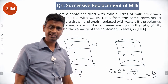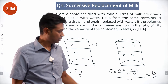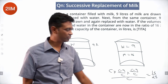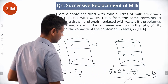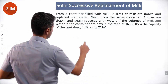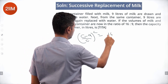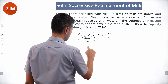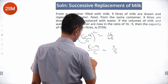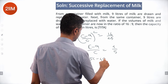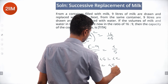The fraction of milk remaining — milk by overall — should be 16 by 25, which is 16 by (16 plus 9). So C minus 9 by C whole squared equals 16 by 25. Therefore C minus 9 by C equals 4 by 5. Solving: 5C minus 45 equals 4C, giving C equals 45.